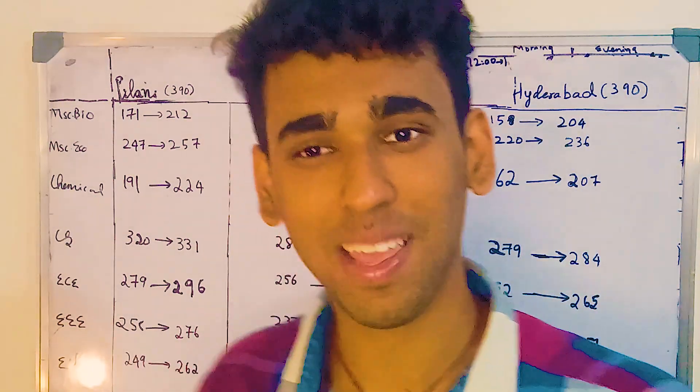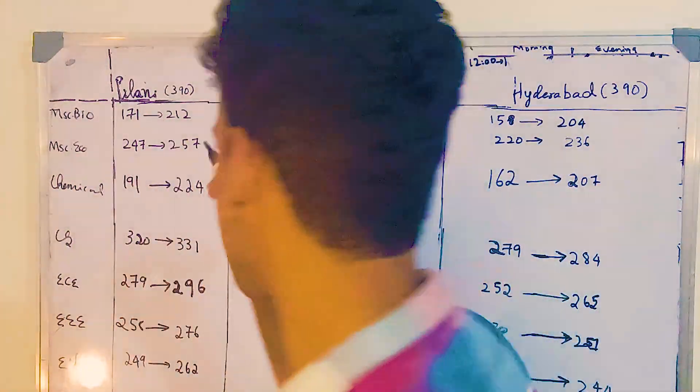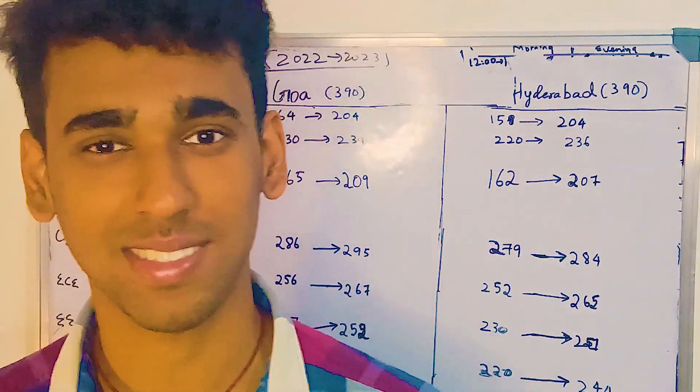You might be thinking, what's written here? Some numbers are written, some arrow marks are written. So what does this mean? This is what we'll be discussing in the next few minutes.